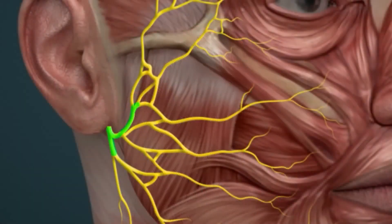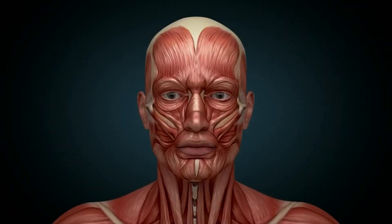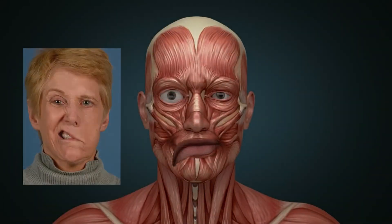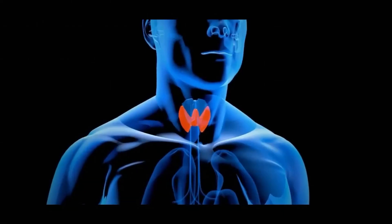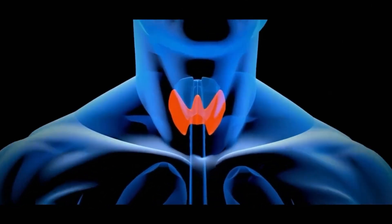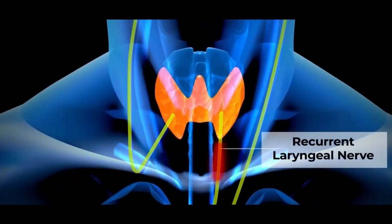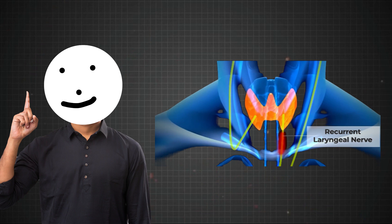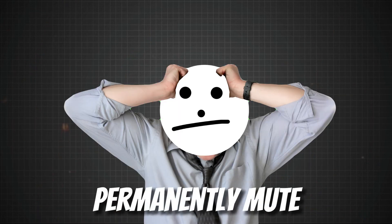If by mistake, the facial nerve is cut during tumor removal, the patient's half of the face will become paralyzed. Similarly, there are dangers during thyroid operations as well. If by mistake, the recurrent laryngeal nerve, which controls our vocal cords, is cut, the patient will become permanently mute.